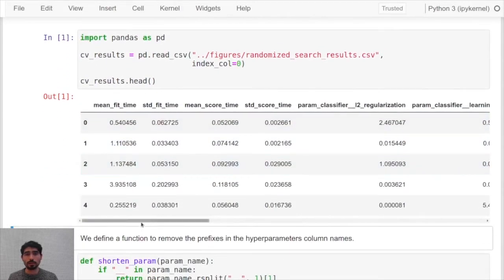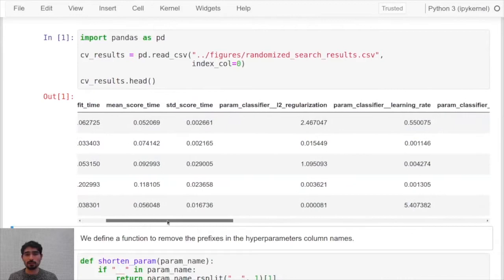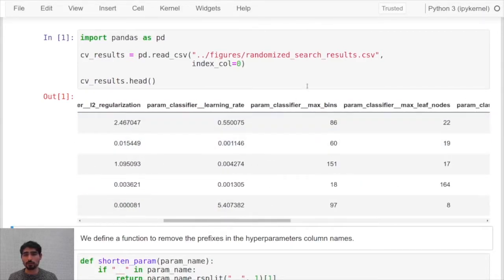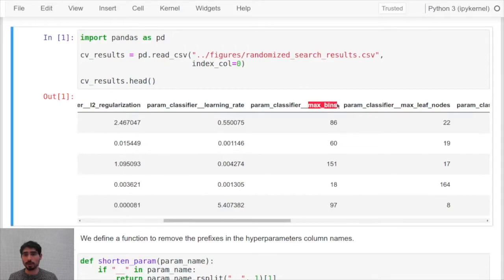We can take a look at the head of this dataset and realize that we are tuning five different hyperparameters and all of them are preceded by this double underscore which comes from the fact that we used a pipeline.